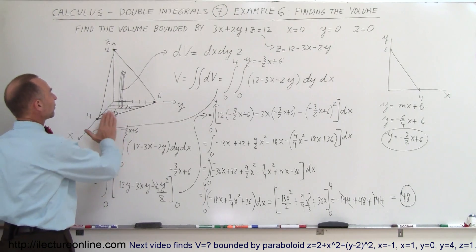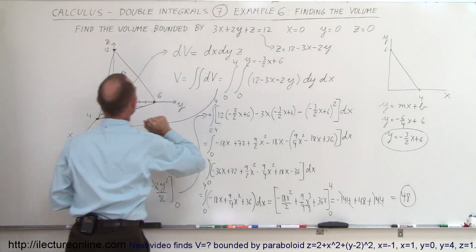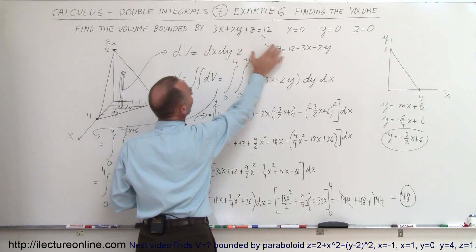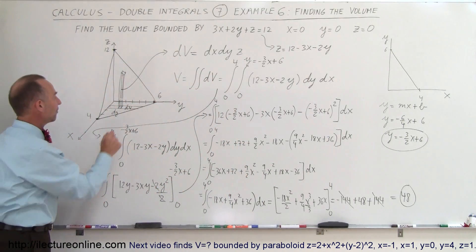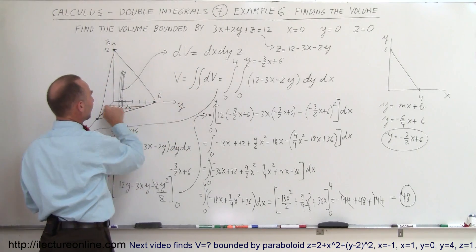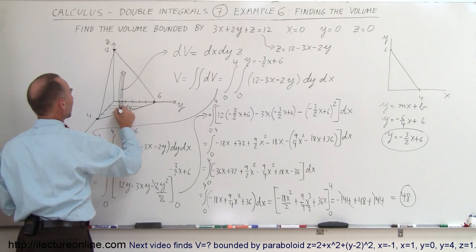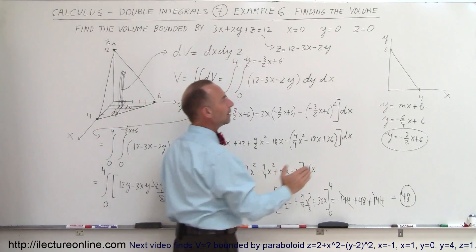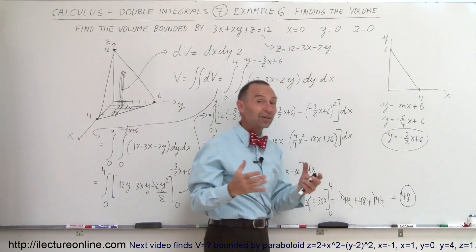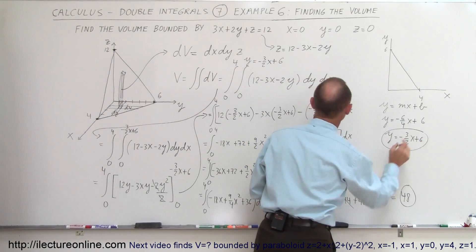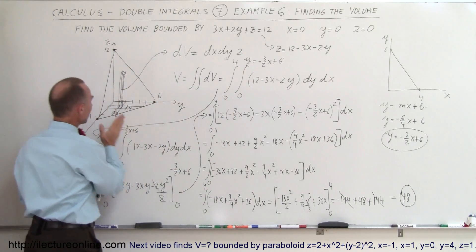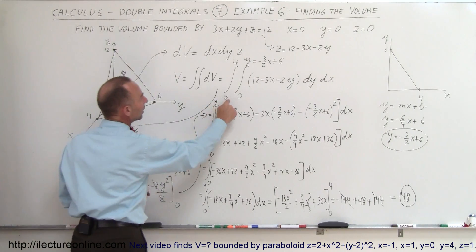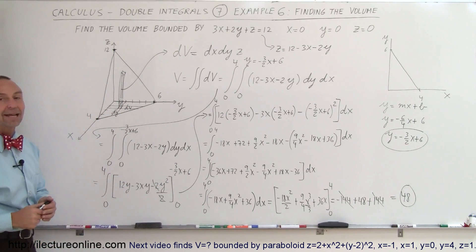Let's review how we did that. Given the plane equation, we first find the small dv element with a base of dx times dy and height z. z is expressed in terms of x and y from the plane equation. We then integrate the volume element twice: first in the y direction from 0 to the intersection line y equals minus 3 over 2 times x plus 6, then in the x direction from 0 to 4. Working through the integration gives the final answer of 48.